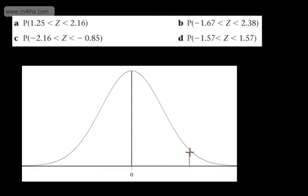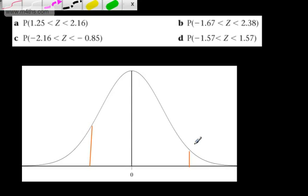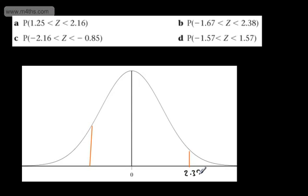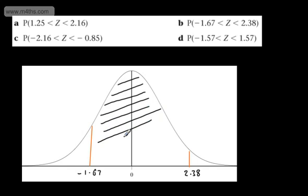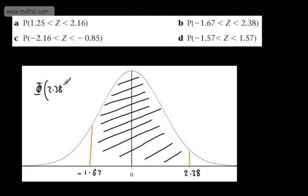We'll take the values: positive 2.38 and negative 1.67. We're interested in the area trapped under the curve to the left of positive 2.38 and to the right of negative 1.67. The most superficial way is: phi of 2.38 minus (1 minus phi of 1.67). If you've seen the previous videos, you'll see that makes sense.